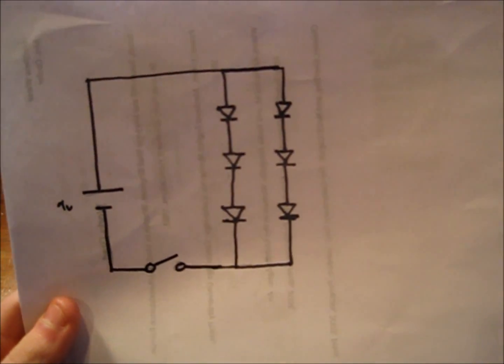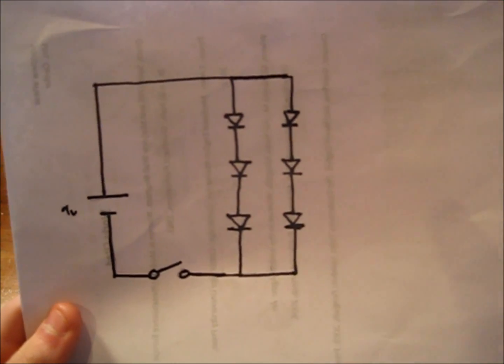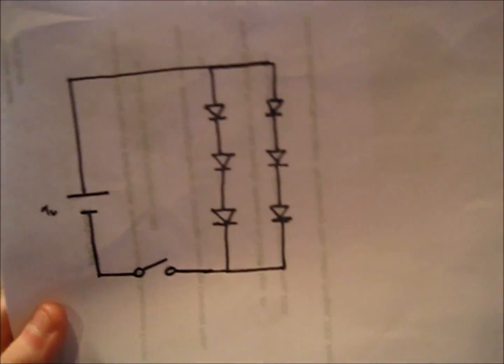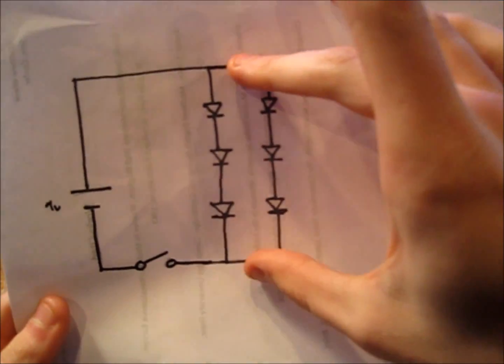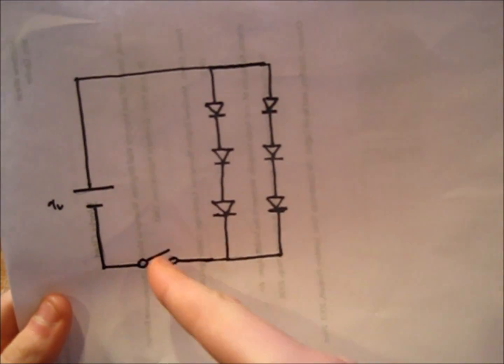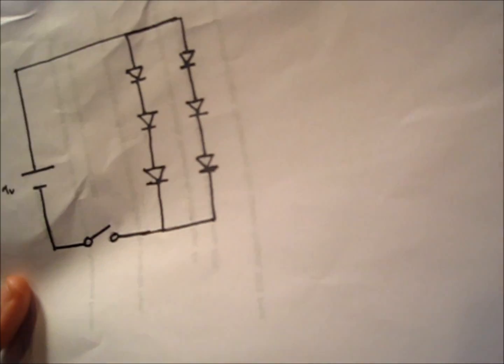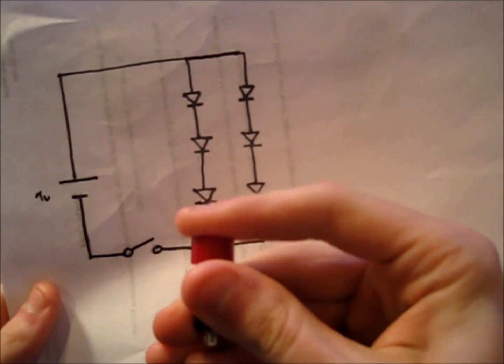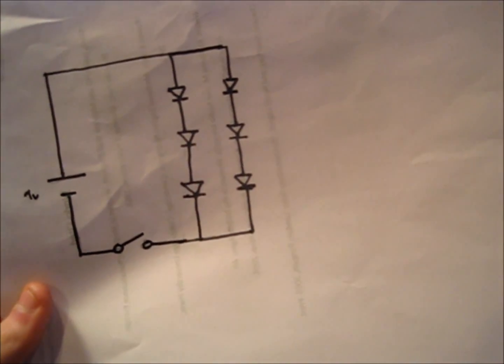Alright, so this is the basic schematic that we're going to be making. All it is is two sets of these three LED lights, and they're going to be wired in parallel. Then they're just connected to the 9-volt battery, and I'm going to add a little switch that I got from Radio Shack. It's not necessary, it just makes it a little bit easier to turn on and off.